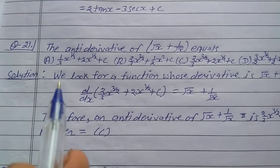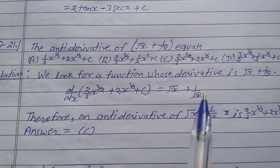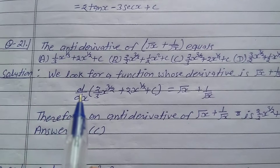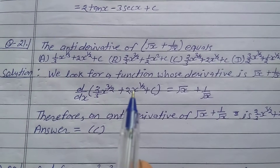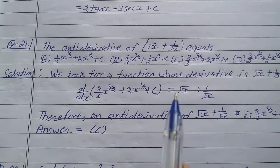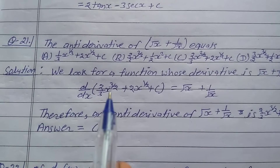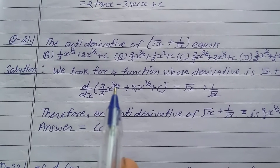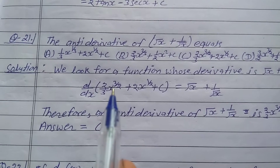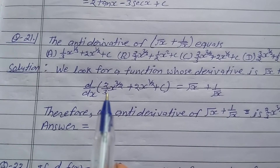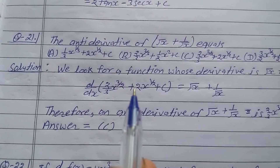Solution: Find the antiderivative of the function whose derivative is √x + 1/√x. Checking option C — d/dx of [(2/3)x^(3/2) + 2x^(1/2) + c]: differentiating x^(3/2) gives (3/2)x^(3/2 − 1), so the (2/3) and (3/2) cancel, leaving x^(1/2), which is √x.